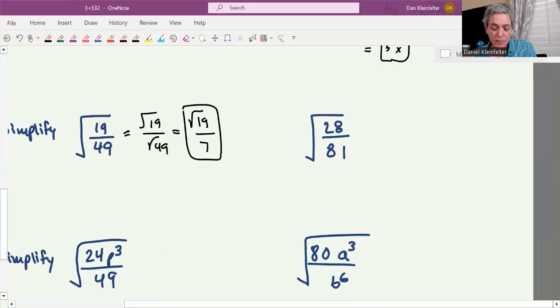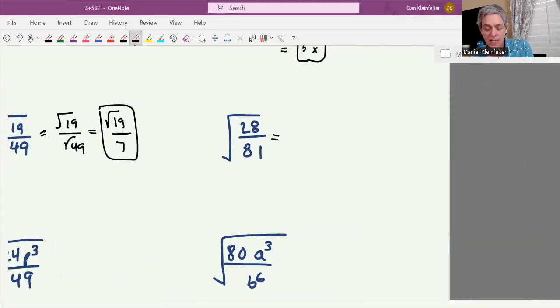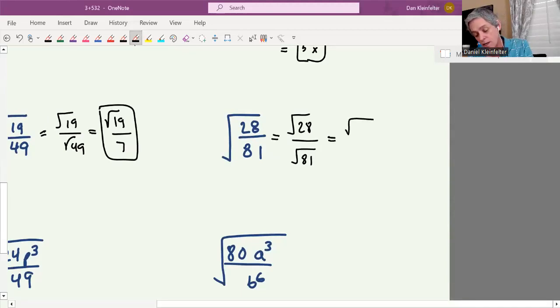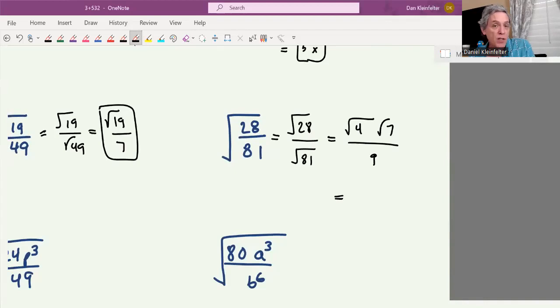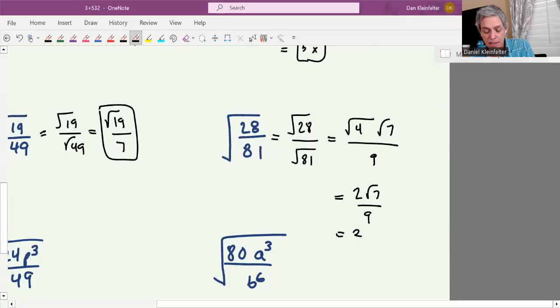Let's continue. 28 over 81. For this one, there aren't any common factors that we can divide out, so let's just separate this into two separate square roots. We'll have the square root of 28 divided by the square root of 81. For 28, that is 4 times 7, and the square root of 81 is 9. The square root of 4 gives us 2, so we'll have 2 square roots of 7 over 9, or some people like to write that as 2/9 square root of 7. Either way is okay.